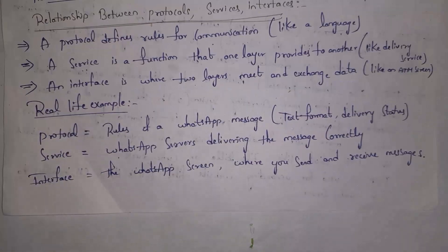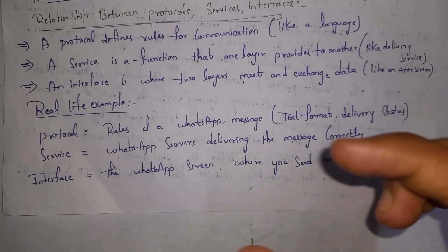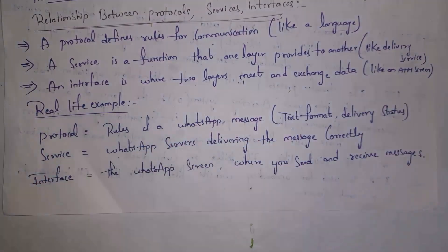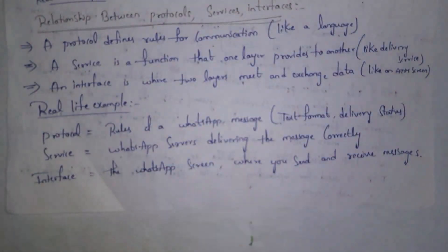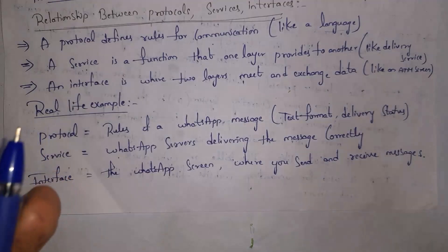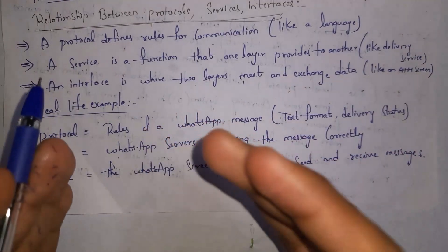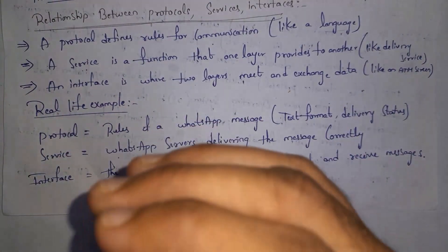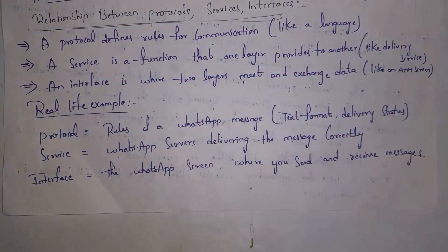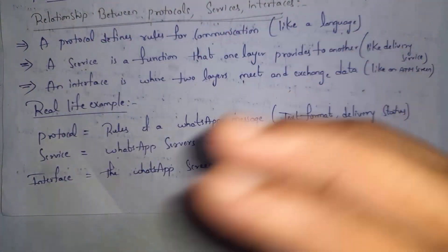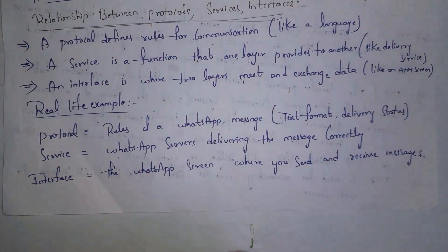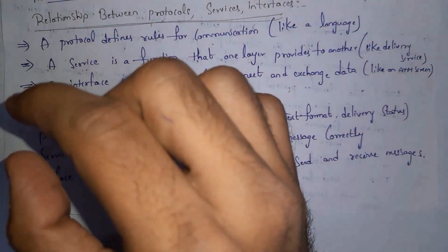For example, consider WhatsApp. WhatsApp contains protocols — rules like we can only send text and images, and there are delivery statuses like single tick, double tick, and blue tick. When you send a message, it is delivered correctly through various layers, each performing certain tasks. The WhatsApp screen acts as an interface, because it is the point that connects you and your friend — that is the interface.